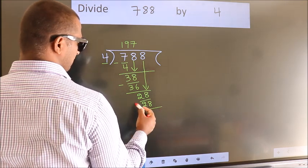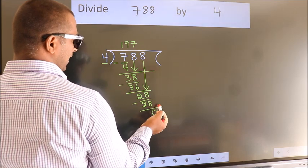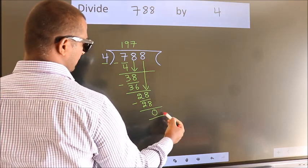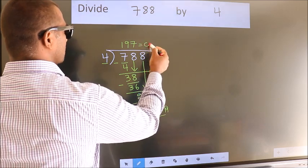Now, we subtract. We get 0. No more numbers to bring it down. So, we stop here. This is our remainder. This is our quotient. Thank you.